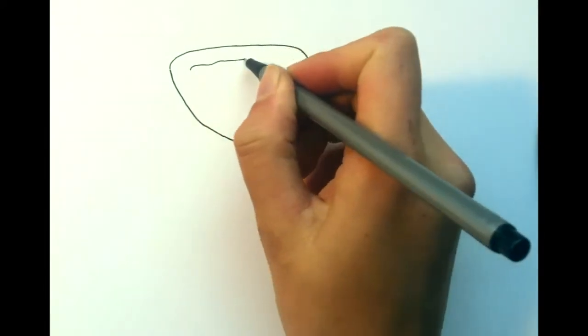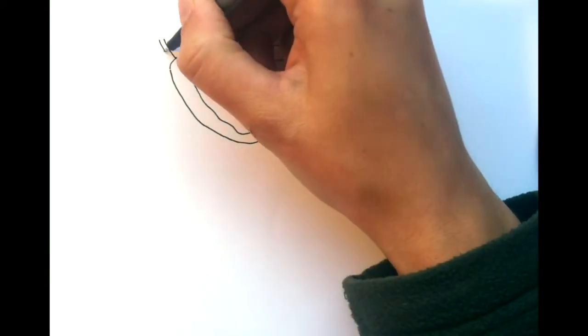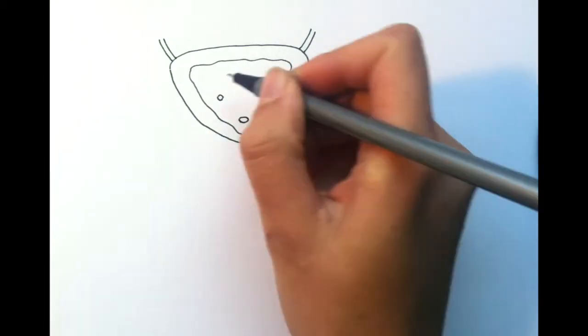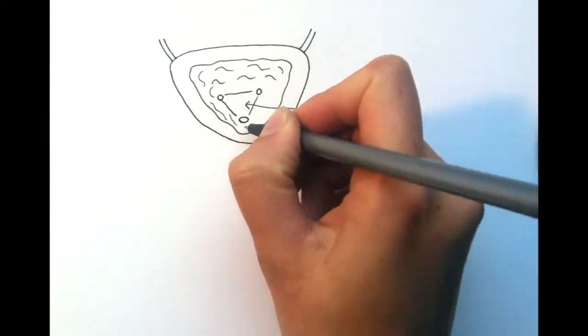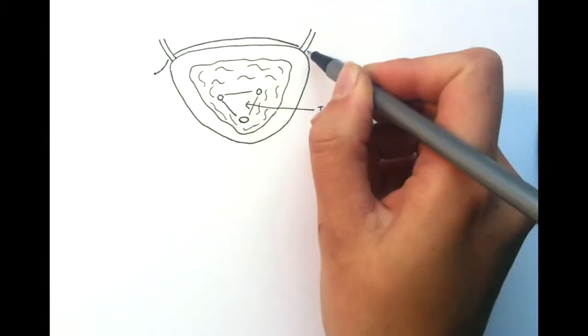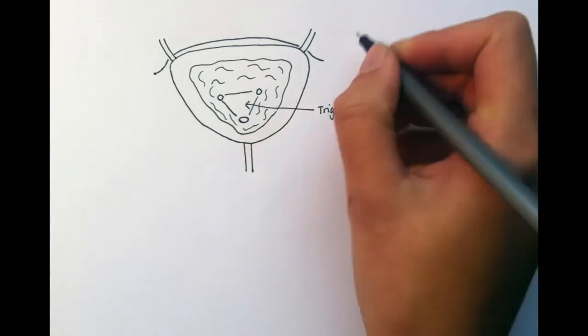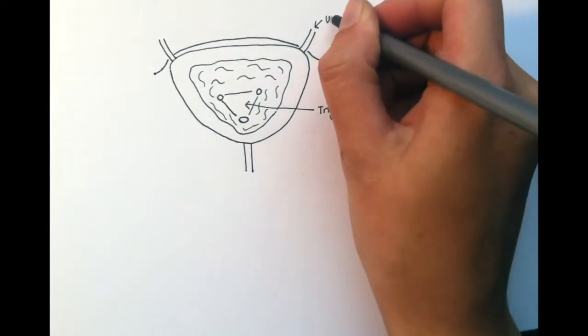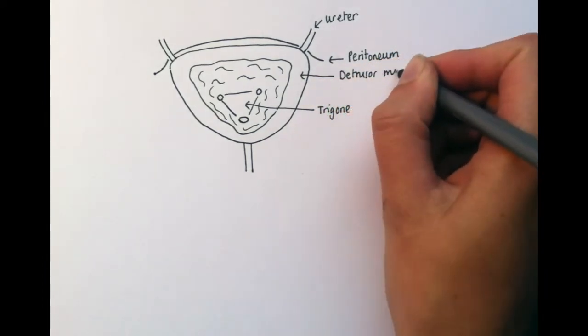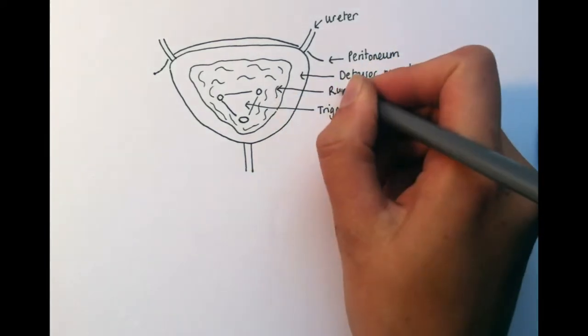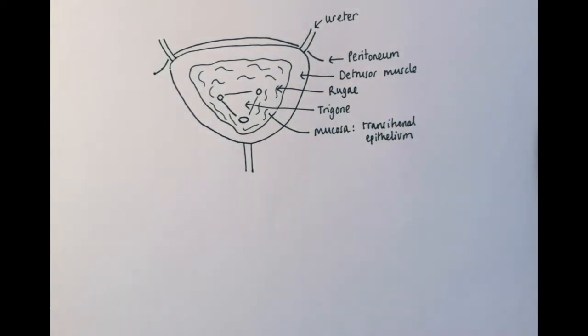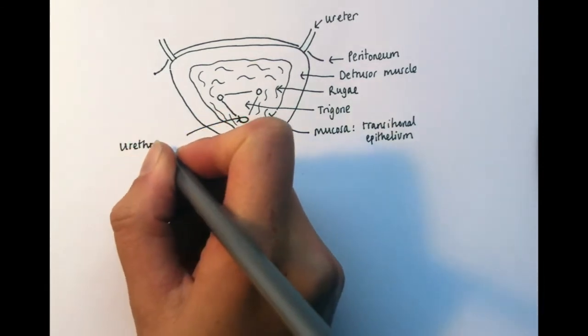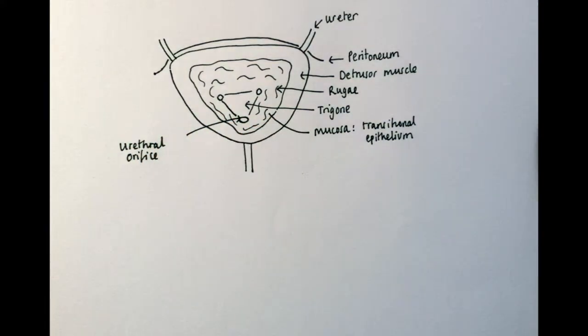Looking at more detail at the bladder, you can see that the bladder is a fibromuscular organ. Its function is to store urine before it can be expelled. It sits in the true pelvis and is covered by a layer of peritoneum. The ureters both pierce the wall of the bladder, which is made up of a thick layer of detrusor muscle. The inner layer of the bladder is wrinkled, made up of rugae. This mucosal layer is made up of transitional epithelium. The area between the ureters and the urethral orifice is called the trigone. This area is more fixed in place and therefore isn't wrinkled.